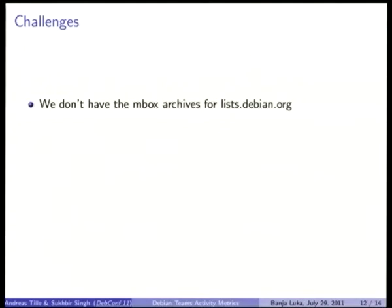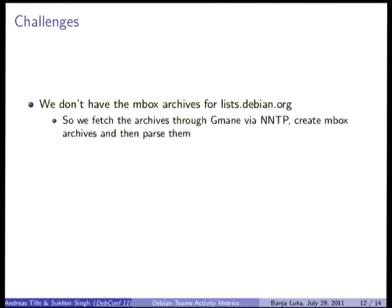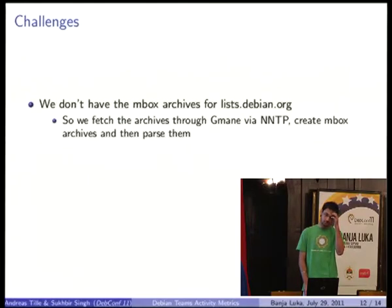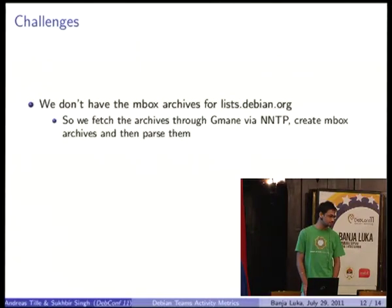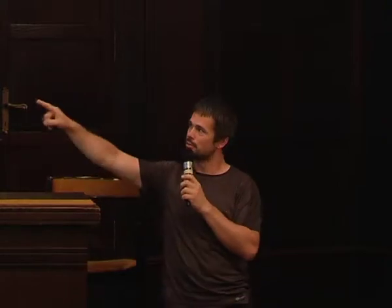Now we have the challenges — the problems we faced. We started with a web archive because the mboxes were not publicly available. That was really bad. We have a Python module which can parse NNTP. There are mboxes on master, and I can parse them, but not he and not the public. We want to publish this data. We elaborated with Listmasters and kept asking them to please publish these mboxes — we have mboxes on Alioth with code. But you can't use the mboxes on lists.debian.org.